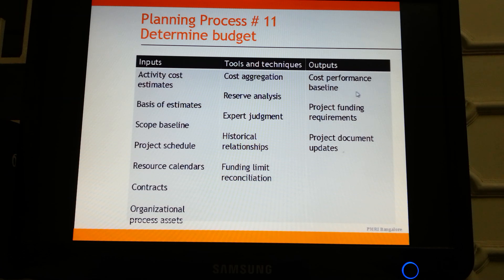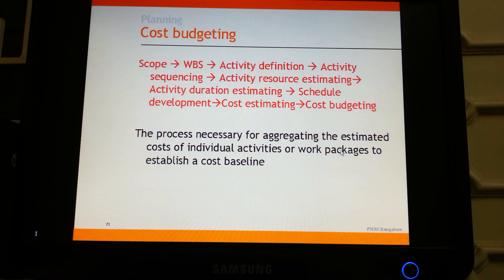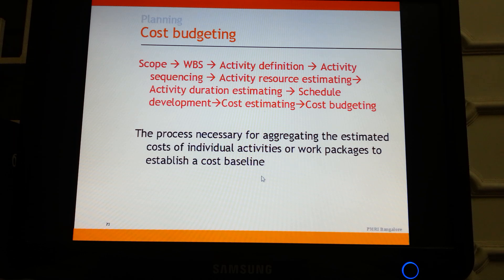The outputs of determining budget are the cost performance baseline, project funding requirements, and project document updates. Cost budgeting is the process of aggregating the estimated costs of individual activities or work packages to establish a cost baseline.